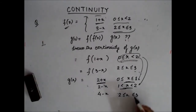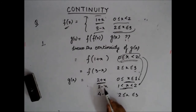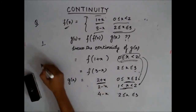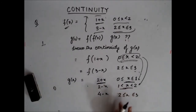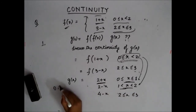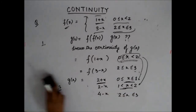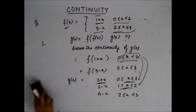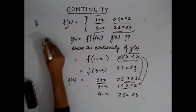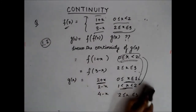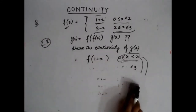At x = 2, the left-hand limit using 2 − x gives 0, and the right-hand limit using 4 − x gives 2. Since 0 ≠ 2, the function is not continuous at x = 2 either. So the points of discontinuity are x = 1 and x = 2.